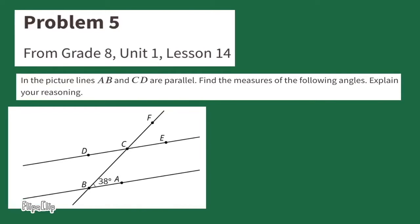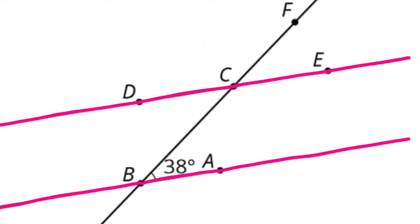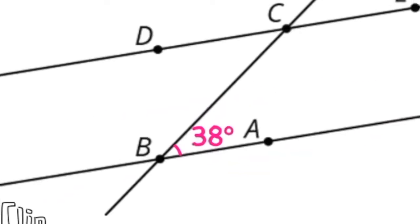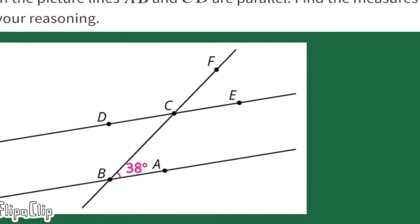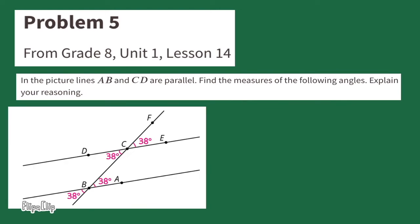Number 5, from 8th grade Unit 1, Lesson 14. In the picture, lines AB and CD are parallel. Find the measure of the following angles. We're given that lines AB and CD are parallel, and we're given one angle measure of 38 degrees. We can use this clue to find the other angle measures of 38 degrees using corresponding angles. Then we can find the remaining angle measures because a straight line is 180 degrees. So 180 degrees minus 38 degrees equals 142 degrees. Now we know the angle measure for the rest of the missing angles.